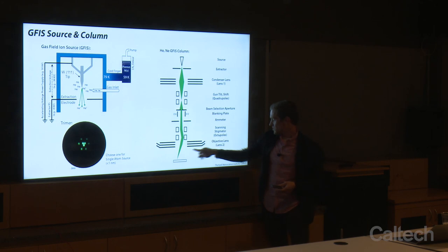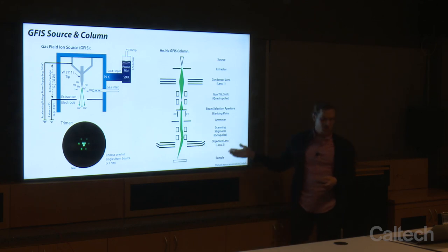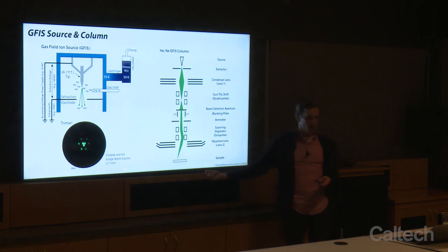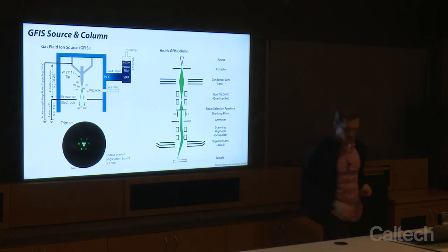Lastly, the beam enters the objective lens — lens two on the system. That's responsible for forming it into a small probe that then scans over the surface.